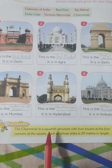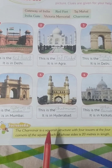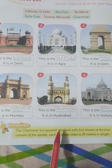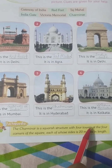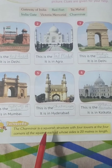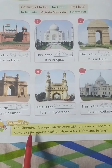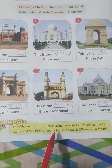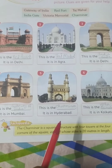The Charminar is a square structure with a tower at each of the 4 corners. Each side of the square is 20 meters in length.